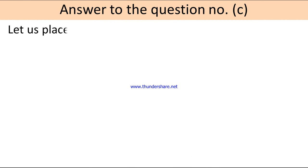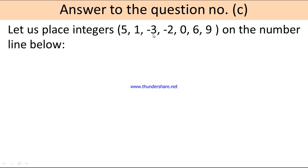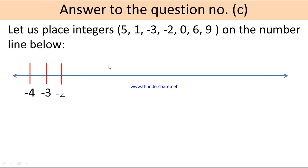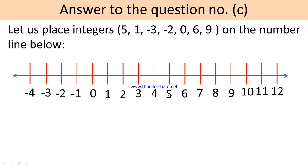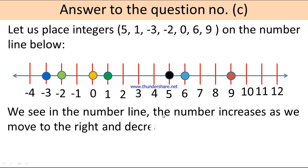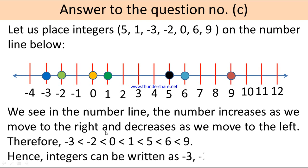Answer to question number C. Let us place all the integers 5, 1, minus 3, minus 2, 0, 6, 9 on the number line. Here is the number line. I will place all these numbers: first 5, then 1, then minus 3, then minus 2, then 0, then 6, and then 9. Looking carefully at the number line, we see the number increases as we move to the right and decreases as we move to the left.